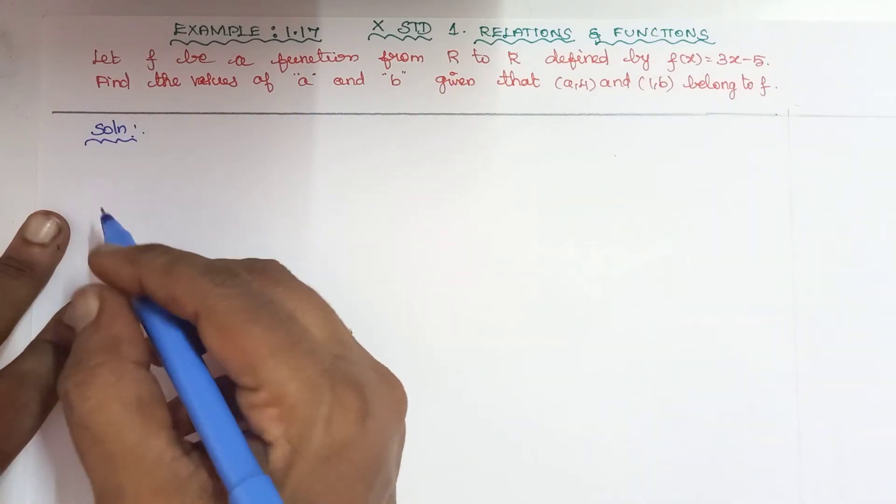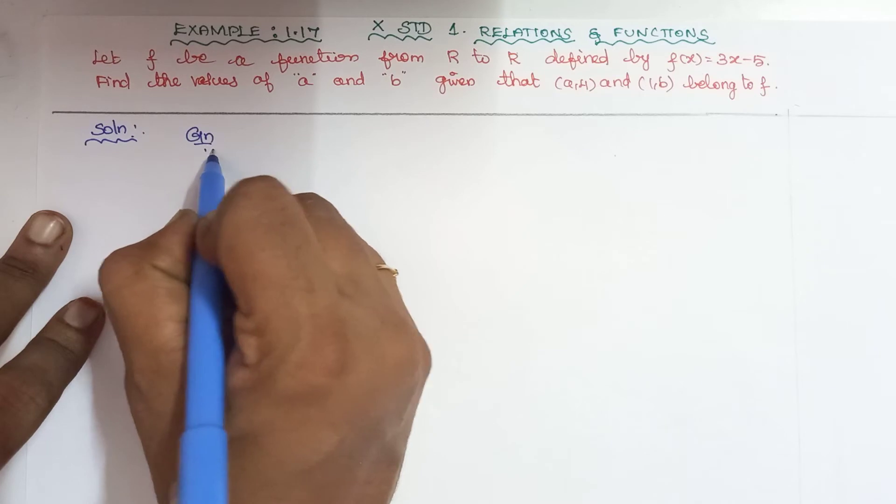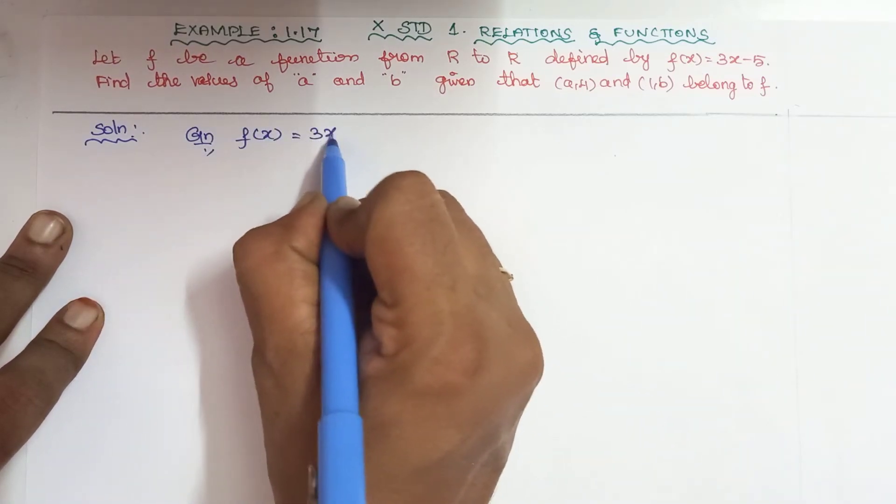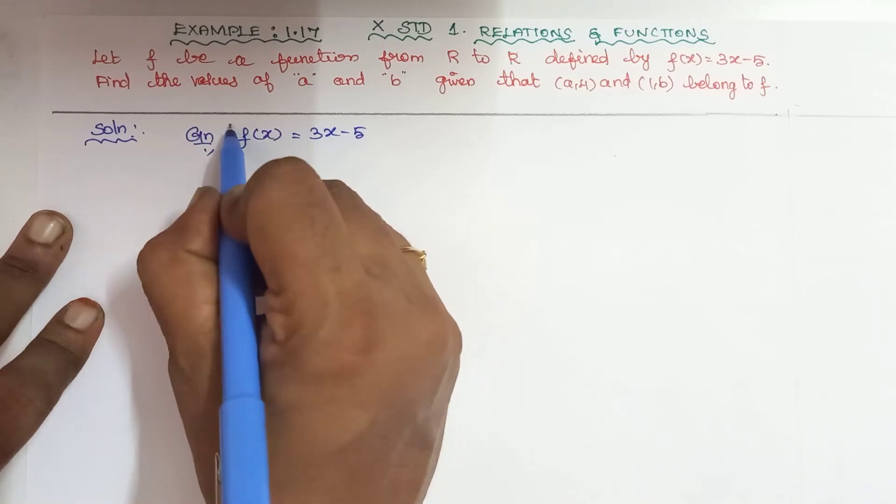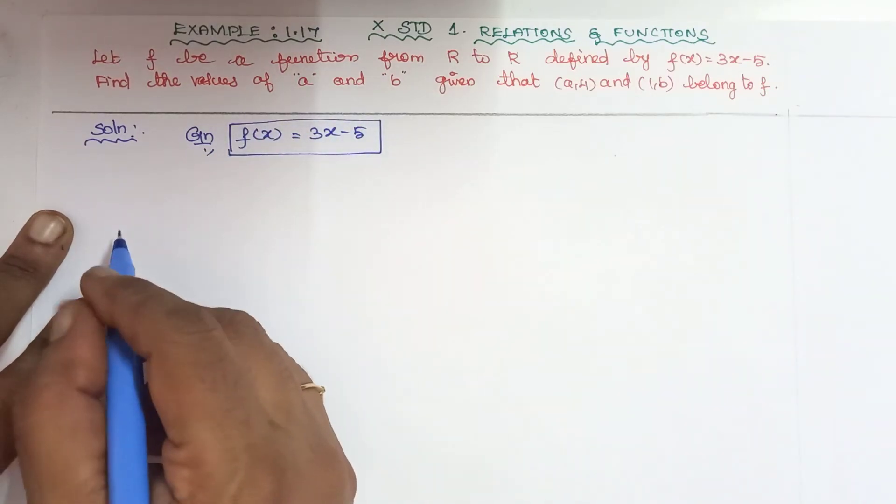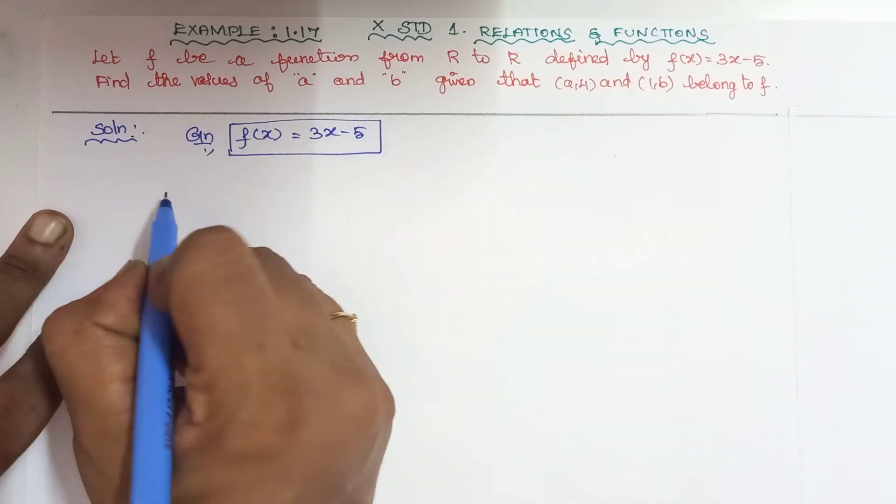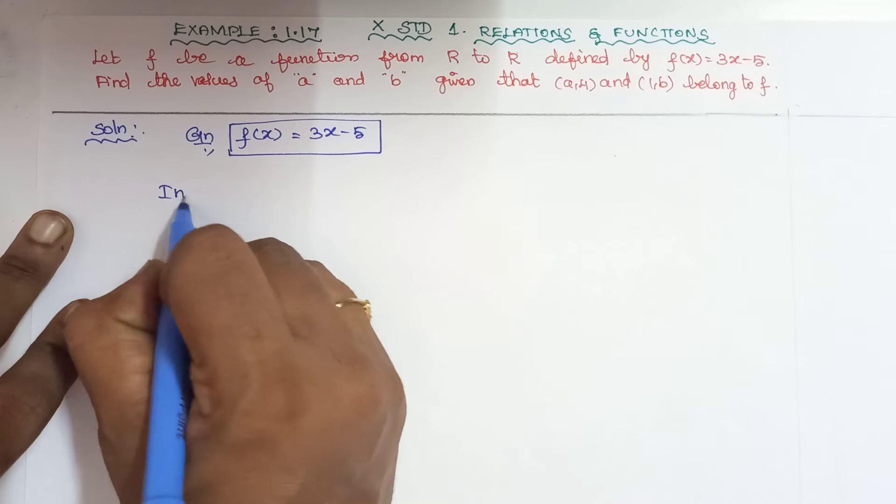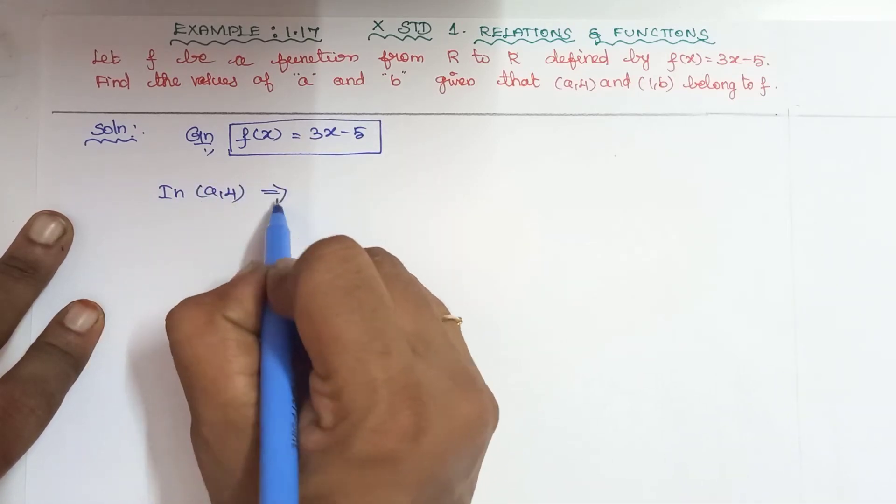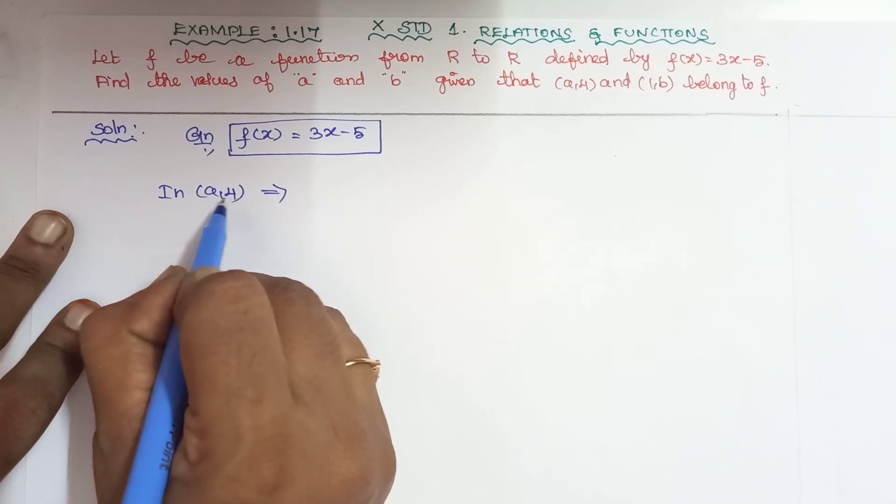So first, the relation is given: f(x) = 3x - 5. This relation is used to find the a and b values. First pair: in (a, 4), a is the domain level element and 4 is the range, that is the image of a.